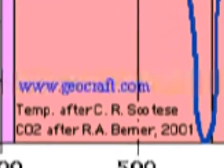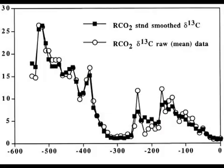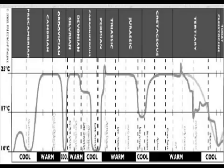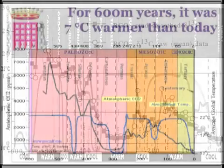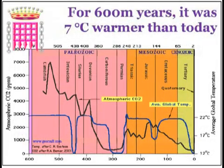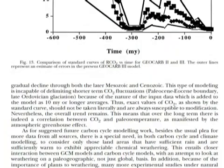Monckton's sources for no correlation between CO2 and temperature are shown right here. Two researchers: Berner, who compiled a graph showing CO2 levels, and Scotties, who compiled a graph showing temperatures. Put the two together and you get the graph Monckton used. Scotties hasn't done any analysis of correlation, but Berner has. So let's look at the paper where the data Monckton used was published, which obviously Monckton should have read if he's citing this as his source.